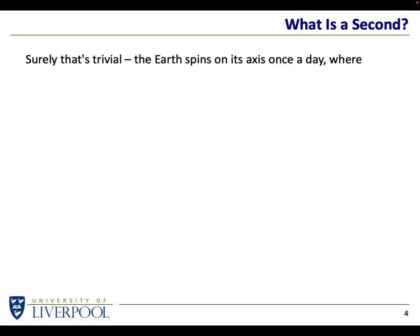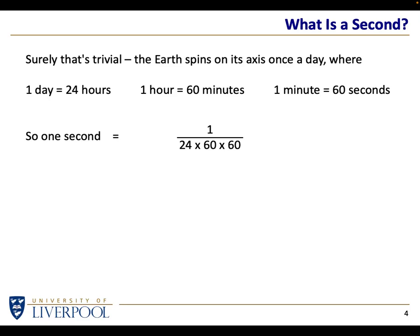When you ask about a second, you have to think about its definition. Everybody knows it: one day is divided into 24 hours, one hour into 60 minutes, and each minute into 60 seconds. So one second is 1 over 86,400 — that fraction of a day. The number 86,400 will keep cropping up in this talk.